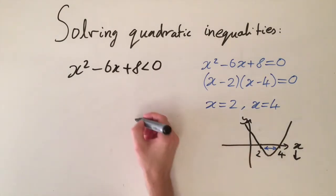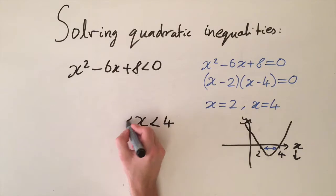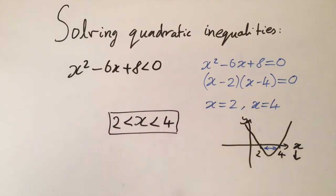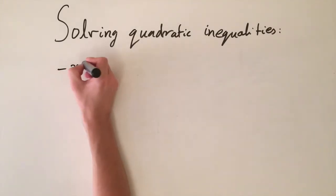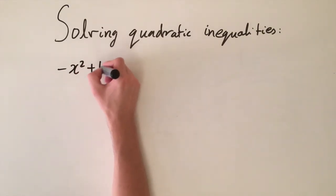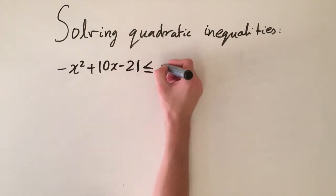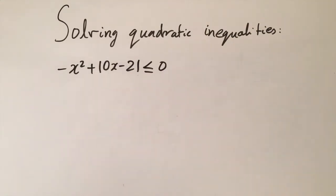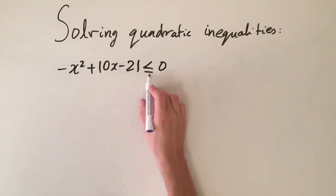So the solution just pops out: x is less than four and greater than two. Let's do another example. This time we're going to have a negative coefficient of the x squared term, so we'll have minus x squared plus ten x minus twenty-one is less than or equal to zero. This is a similar problem and we solve it using exactly the same method.